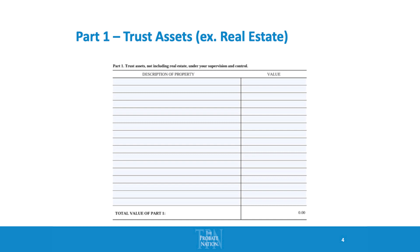Part one assets, like you said, include every single asset that's not real estate. So if you've got cars, boats, airplanes, brokerage accounts, CDs, mineral rights, businesses, checking accounts — all of that would show up on part one.